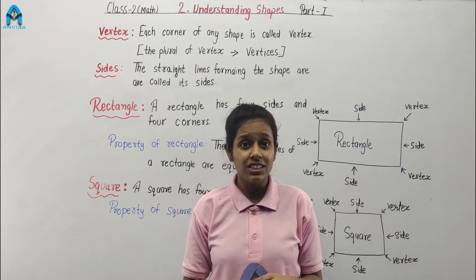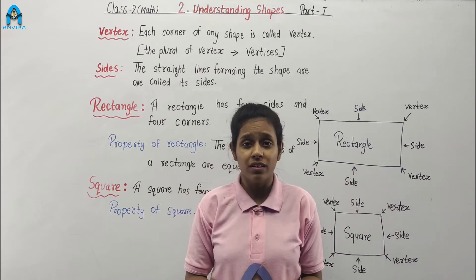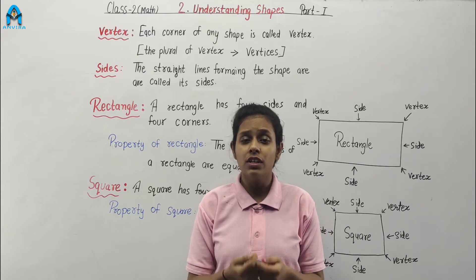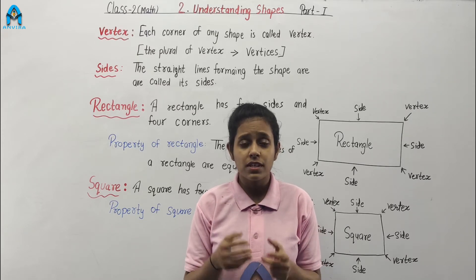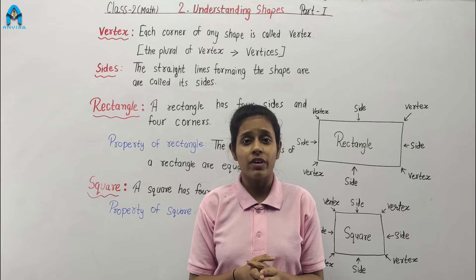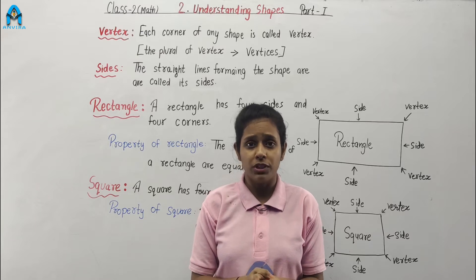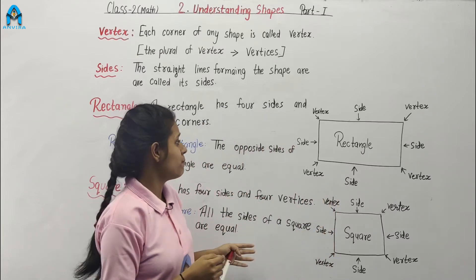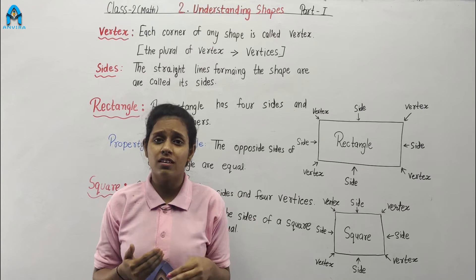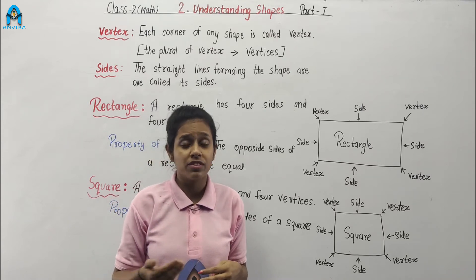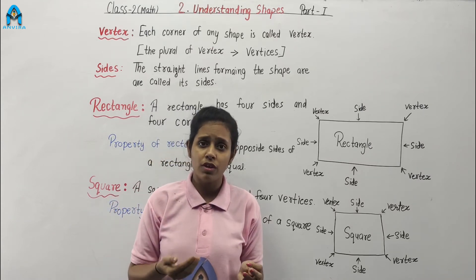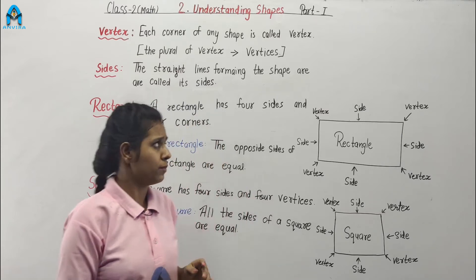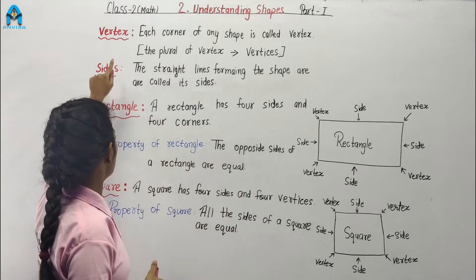In this chapter, we learn about shapes. What is shapes? Shapes are the outer part of an object. In this chapter, we learn about many shapes, different types of shapes and understanding the shapes. Let's start.